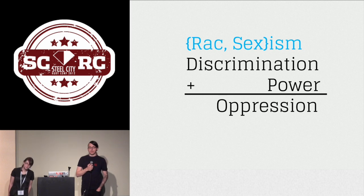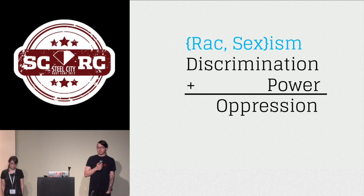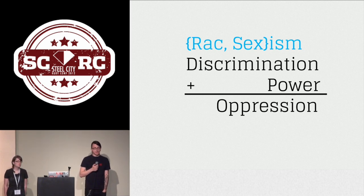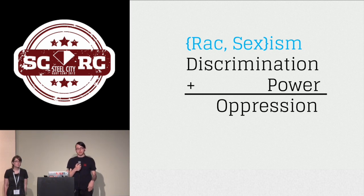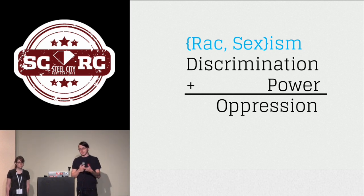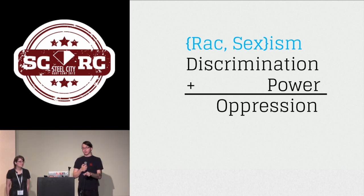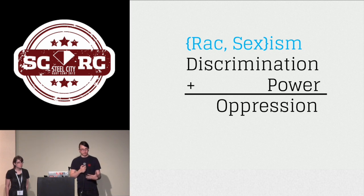The '-isms' — racism and sexism — actually mean discrimination plus power equals oppression. This is why you'll hear some people say you cannot be racist against white people or sexist against men. You can obviously discriminate against men, but without the systematic power that men have in society, you cannot oppress men in the same way that women have been oppressed for thousands of years. In a social justice context, these words have a slightly different meaning than what people on Reddit tend to say. What's important is that it's systemic power — not about individuals, but about the group dynamics of the society we live in.